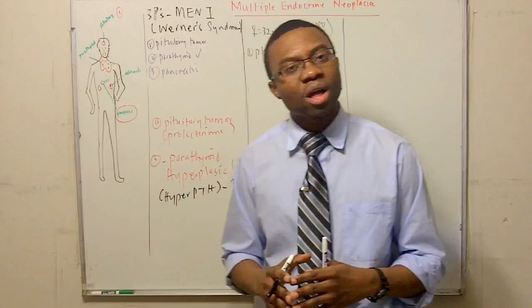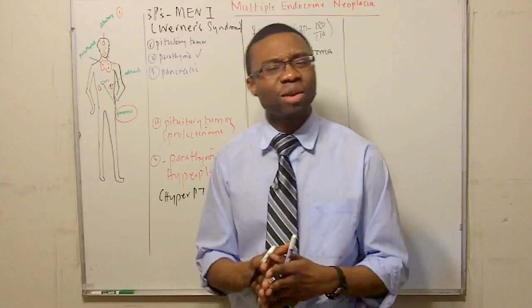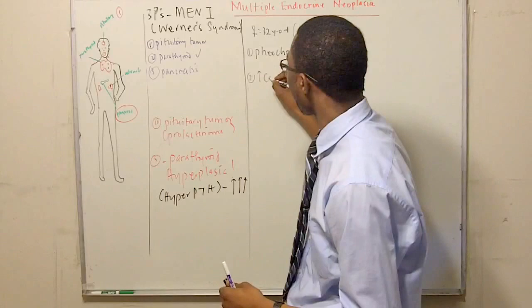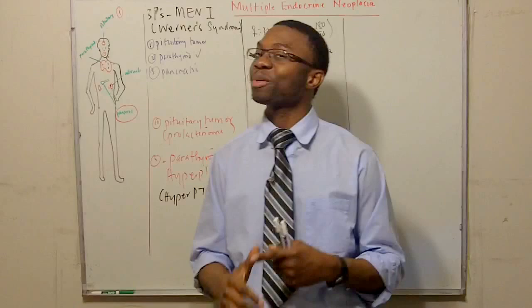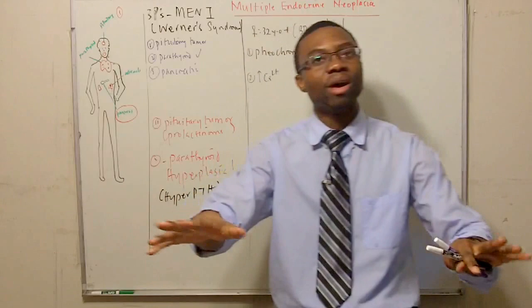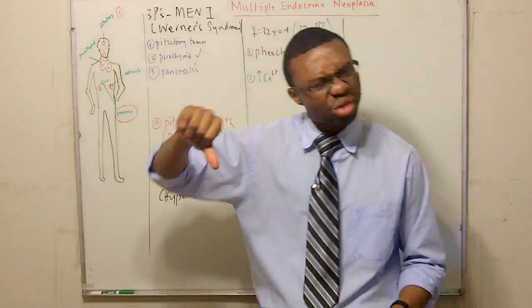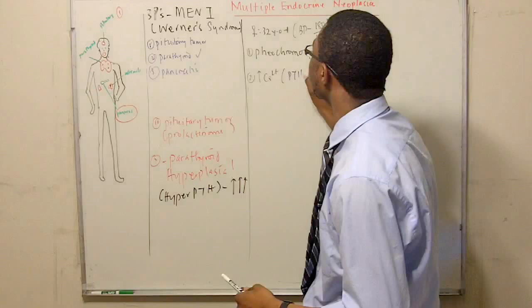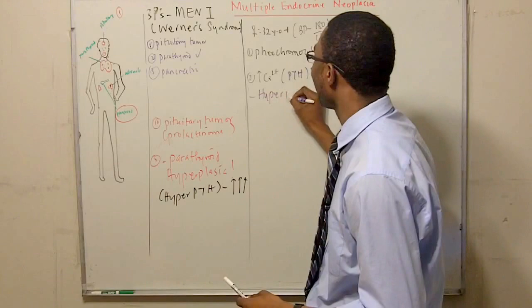But, unfortunately, we ordered a calcium level and a calcium level was really, really high. Elevated calcium. And what is the most, two common, most common things of elevated hypercalcemia? Hyperparathyroidism and cancer. Just the top two. So she did not have cancer. Thank goodness. But she had hypercalcemia and her phosphate level was very low. So, we decided to check the PTH level and PTH was sky high. Guess what she had? She had another hyperparathyroidism.